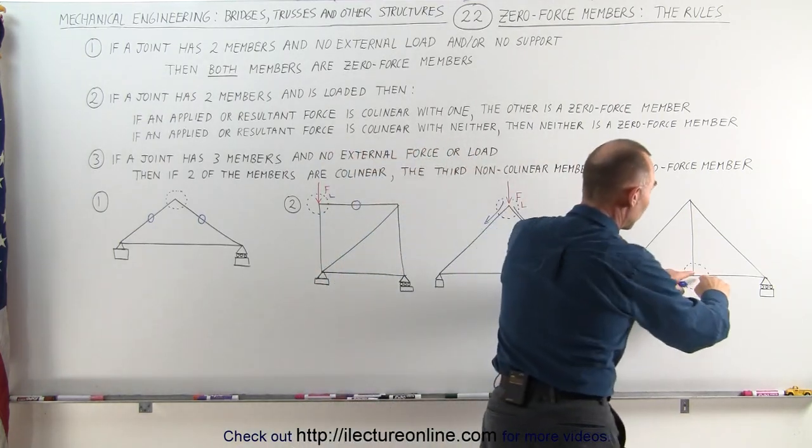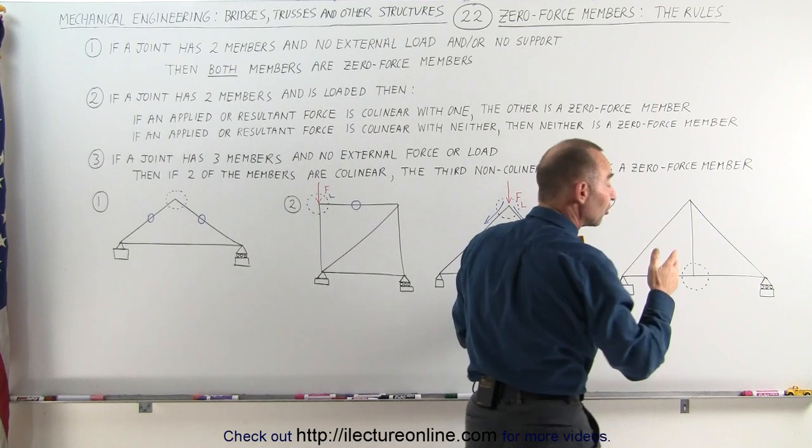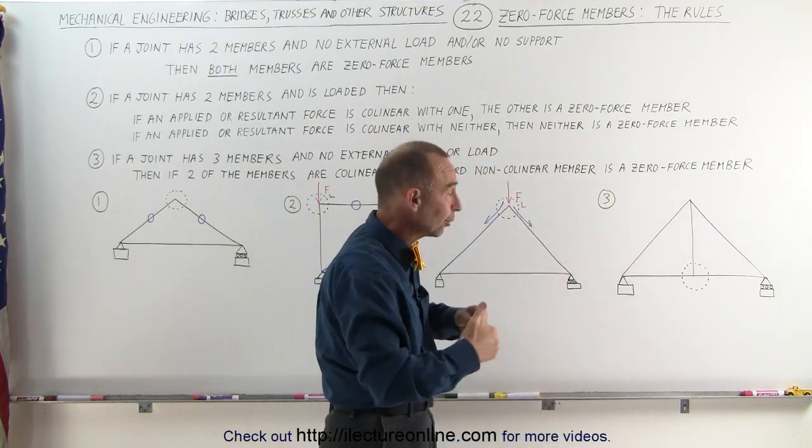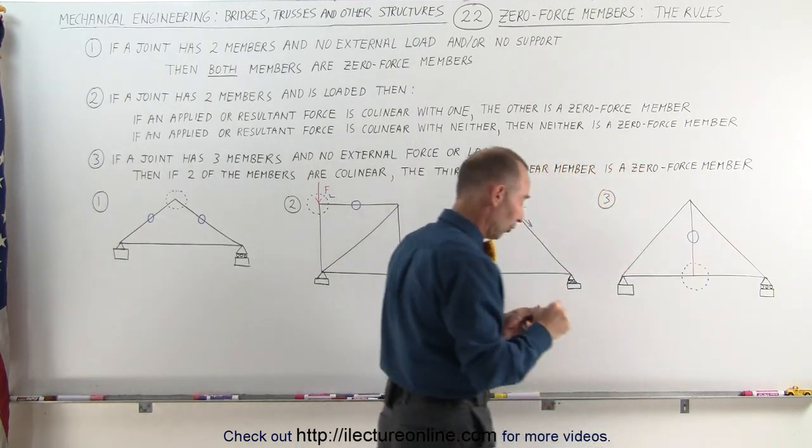So notice here that these two members are collinear, but the third one is not, which means the third one, which is not collinear with the other two, and the other two are collinear with each other, that means this member is a zero force member.